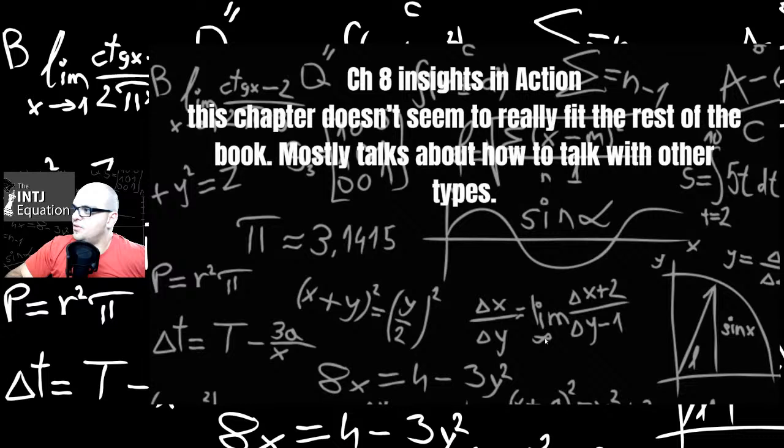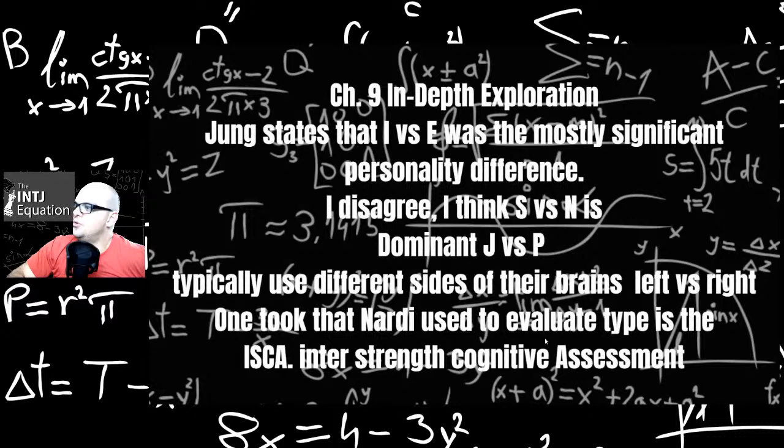Chapter eight, insights in action. This chapter doesn't seem to really fit the rest of the book, so it mostly talks about how to talk with other types. I kind of glossed over it. Go ahead and get this book on Amazon. It's definitely worth a read and buy it and support Dr. Nardi. I think this just didn't fit. It didn't seem to me. So I want to move to chapter nine.